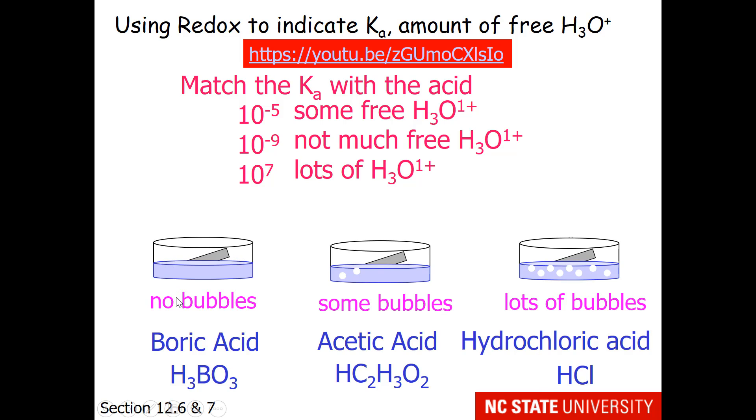When the magnesium strip goes into boric acid, hardly any bubbles of hydrogen gas occur. Which example would you say goes with not very much free hydronium? 10 to the minus 5, 10 to the minus 9, or 10 to the 7th? Well, I hope you're going to say 10 to the minus 9. 10 to the minus 9 is a small Ka value and means not very much free hydronium. And that's probably good because boric acid is what's used for contact lens cleaner. And it's not good to get acid in your eyes.